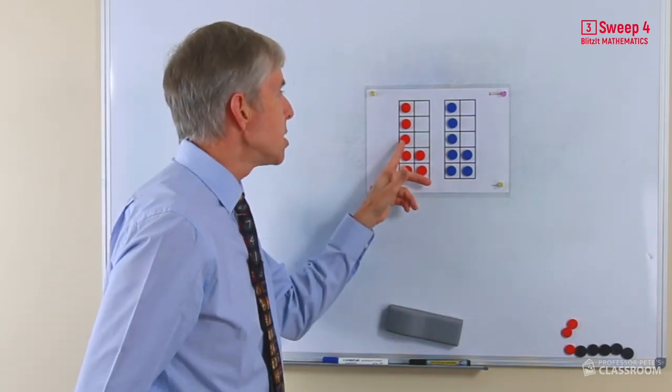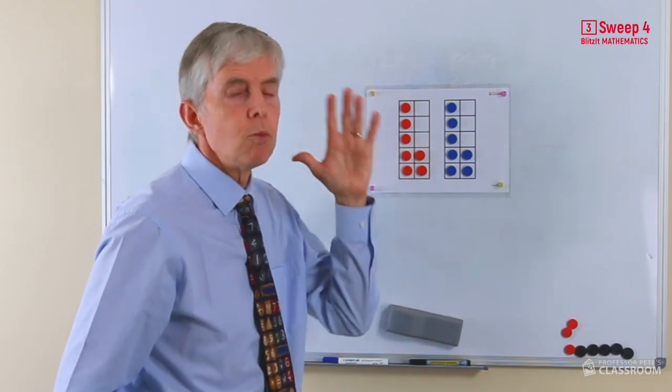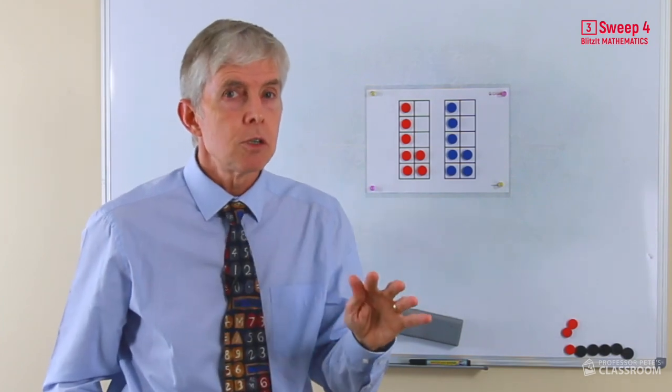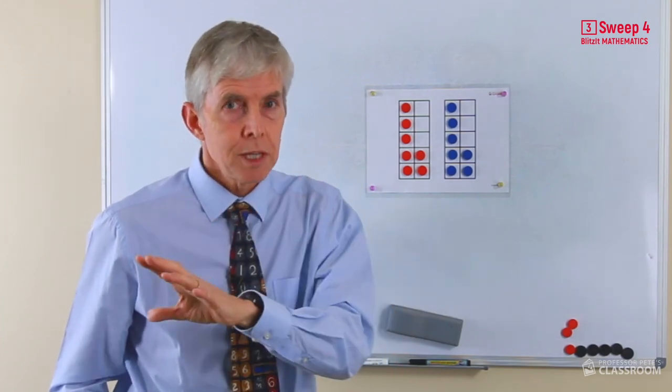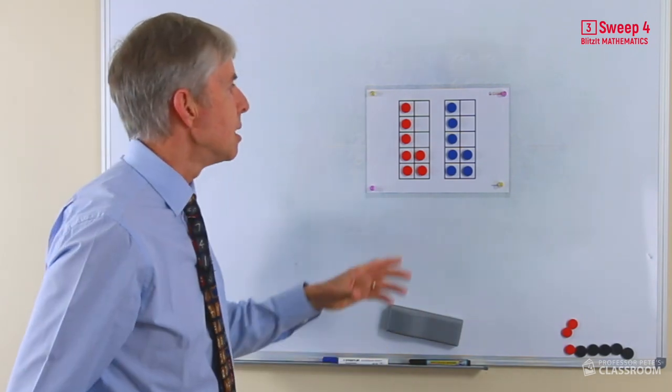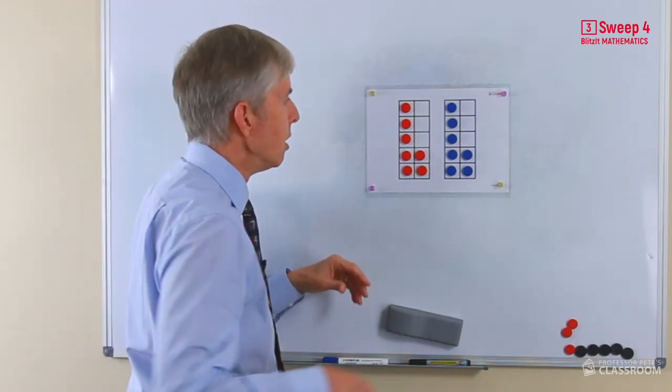Without moving counters, what's this number going to be? Now using this strategy in your head without the ten frames relies on knowing that seven is made of five and two, so that's a useful thing for students to know. There are a number of different ways they could think about this but that's a particularly useful one.